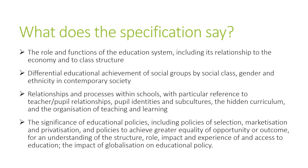The specification doesn't have much in it. The key elements are: the role and function of education systems and their relationship to the economy and class; differentiation in educational achievement between social groups in terms of class, gender and ethnicity; relationships and processes within schools including teacher-pupil relationships, pupil identity, subculture, hidden curriculum and organisation of teaching; and the significance of educational policy, particularly selection, marketisation, privatisation and impacts on equality.